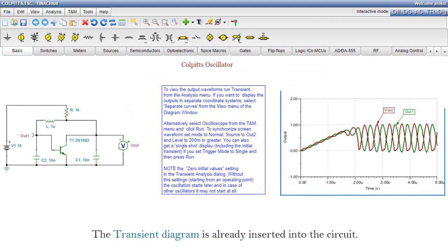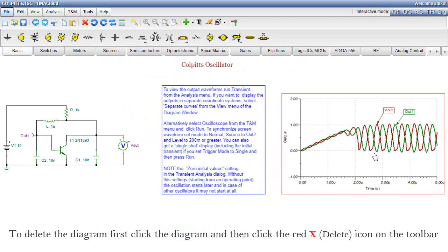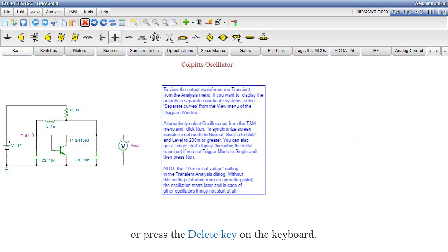The transient diagram is already inserted into the circuit. Delete it before simulation. To delete the diagram, first click the diagram and then click the red X icon on the toolbar, or press the Delete key on the keyboard. Delete the additional text in the same way.